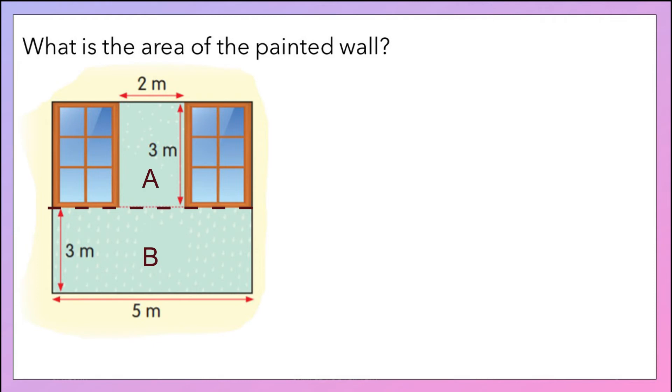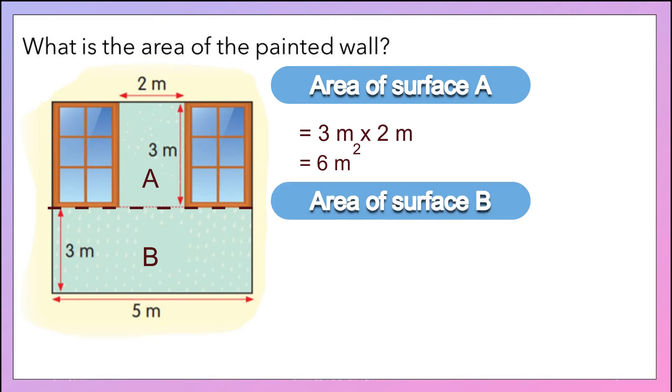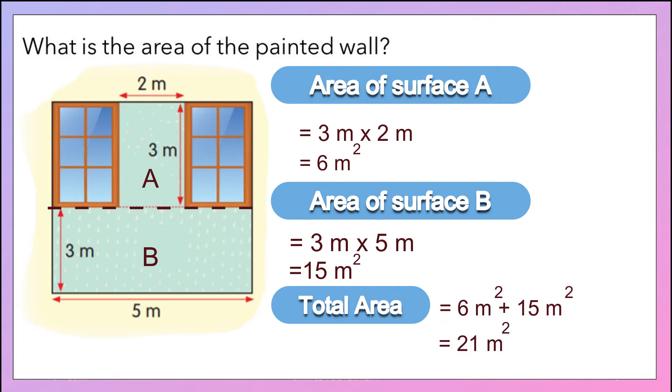Find the area of surface A: 3 meters multiplied by 2 meters equals 6 square meters. Area of surface B will be 3 meters multiplied by 5 meters, equals 15 square meters. Now, total up the area of surface A and B. You will get 21 square meters.